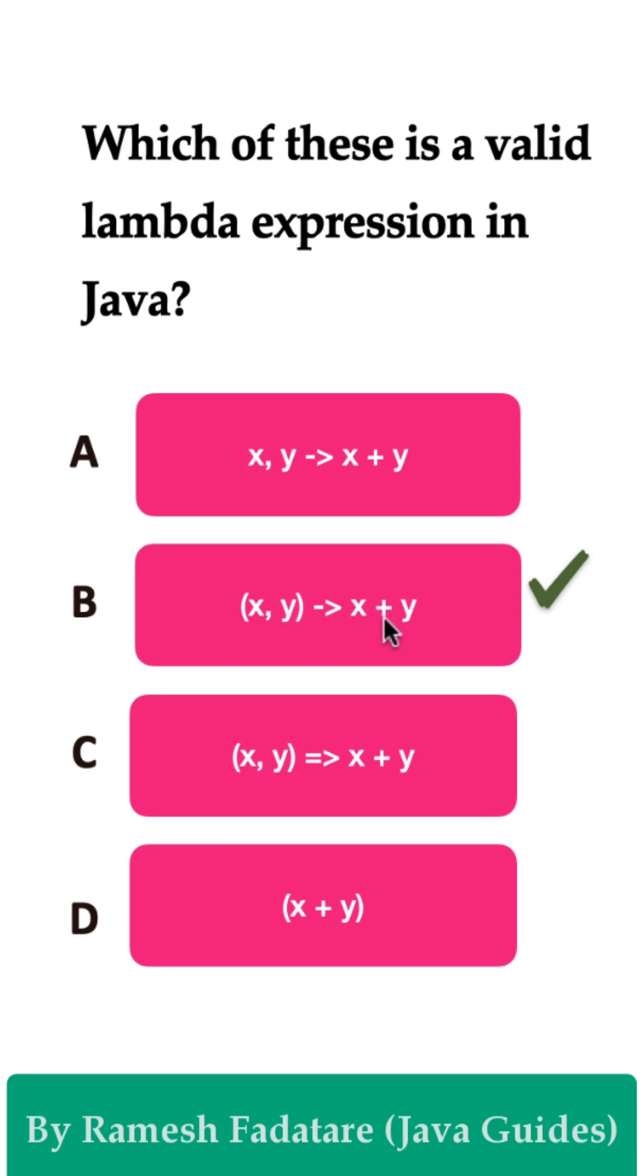Option A is incorrect because there is no parenthesis. Option C is incorrect because the arrow operator is not there. And of course, Option D is also incorrect.